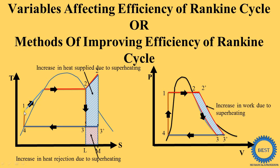The TS diagram is used to find out the amount of heat supplied or heat rejected. During the boiler process, heat energy is supplied — the one-to-two process represents heat supply, and the area under that line indicates the amount of heat supplied. The three-to-four process is the condenser, where heat rejection occurs — the area under three-to-four indicates the amount of heat rejected. These are the basic concepts, and if you understand them, you can easily understand all three processes.